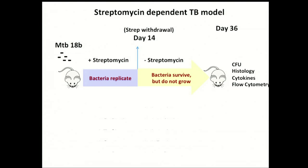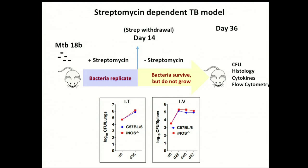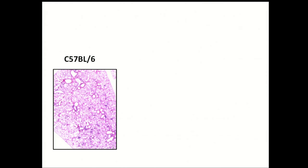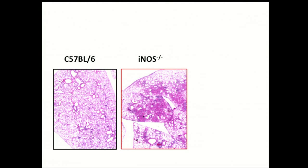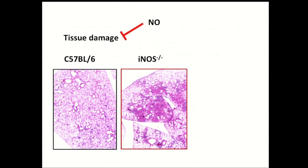Using this model, we could achieve equivalent bacterial numbers in the spleen as well as in the lungs. In this situation, we asked whether iNOS knockout mice would have a different disease compared to wild type mice. To our surprise, we found that iNOS knockout mice, even with the same bacterial numbers, still have worse disease — they still develop necrosis and succumb to infection very quickly. We conclude that nitric oxide can inhibit tissue damage.